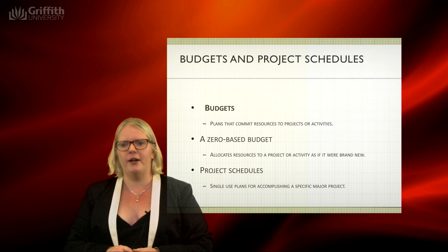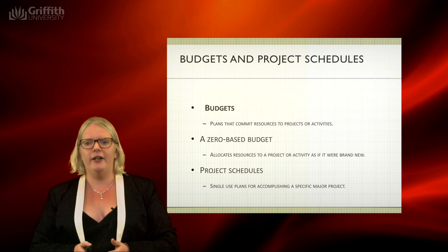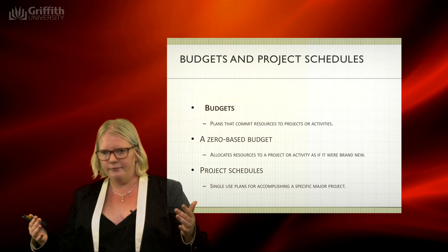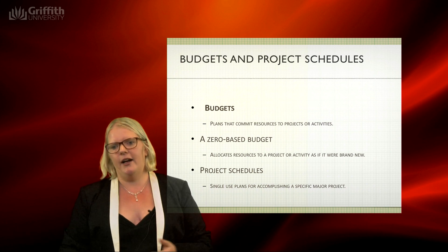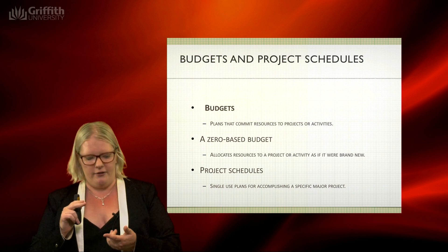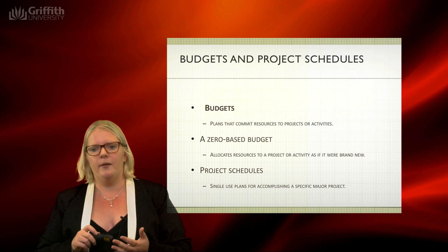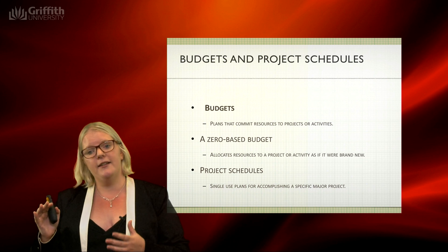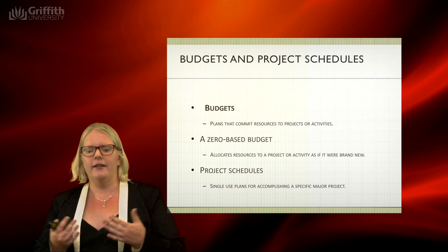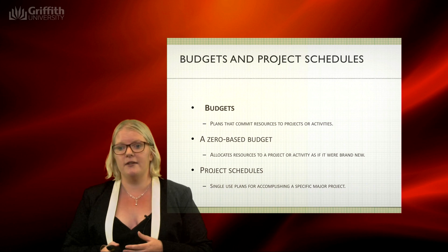At an organizational level, we also create budgets and project schedules. A budget is simply how we're going to commit resources to get to the desired outcome — for example, with a $2 million budget, you allocate funds to training, staffing, purchasing, and quality checks. Without a budget, you don't know what you're really aiming at, so this is where your measurable targets come from, helping you use financial resources effectively and efficiently.